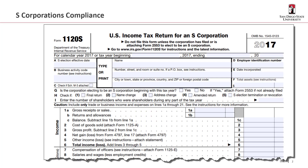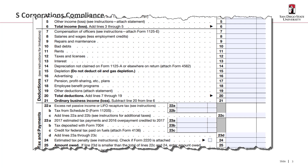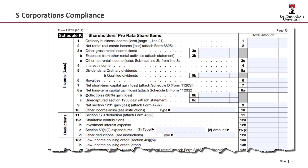Here's what an 1120-S looks like. Should look kind of familiar — identification information at the top, and then we start the calculation of ordinary business income starting with line one, working our way down to line 21, similar to a partnership, not similar to a Corp. We take that ordinary business income and it lands on Schedule K of the 1120-S there on line 21. And like the partnership tax return, we have all the different separately stated items broken out on Schedule K.